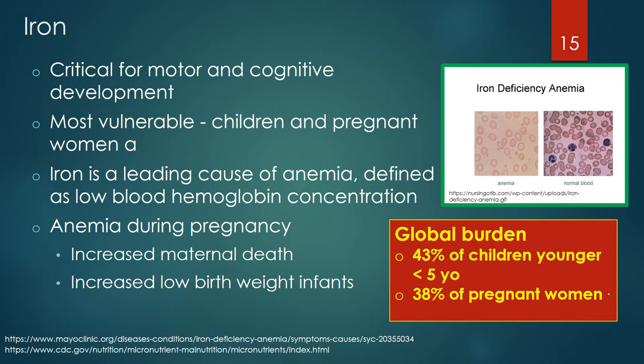Iron is critical for motor and cognitive development. Children and pregnant women are especially vulnerable to the consequences of iron deficiency. Iron is a leading cause of anemia, defined as low blood hemoglobin concentration — a substance in red blood cells that enables them to carry oxygen. Iron deficiency anemia affects approximately 43% of children younger than 5 years of age and 38% of pregnant women globally. Anemia during pregnancy increases the risk of death for the mother and low birth weight for the infant.